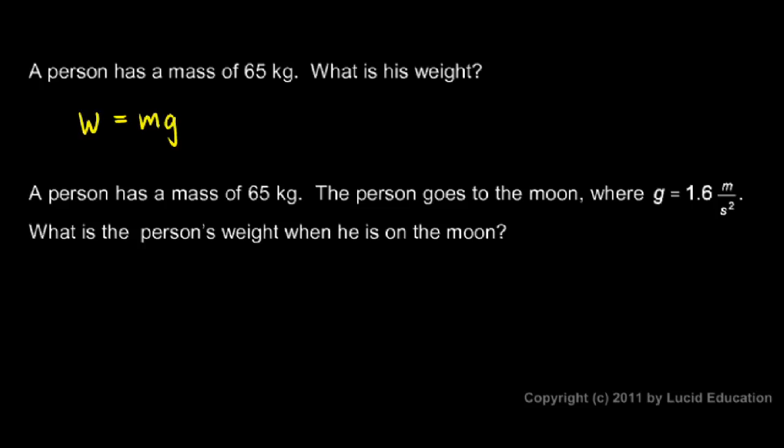The weight, W, is M times G, and we know both of those. The mass is 65 kilograms, and G is 9.8 meters per second squared. So we multiply those together. 65 times 9.8 comes out to 637. And we have kilograms times meters per second squared, and a kilogram times a meter per second squared is a Newton. So this is 637 Newtons.